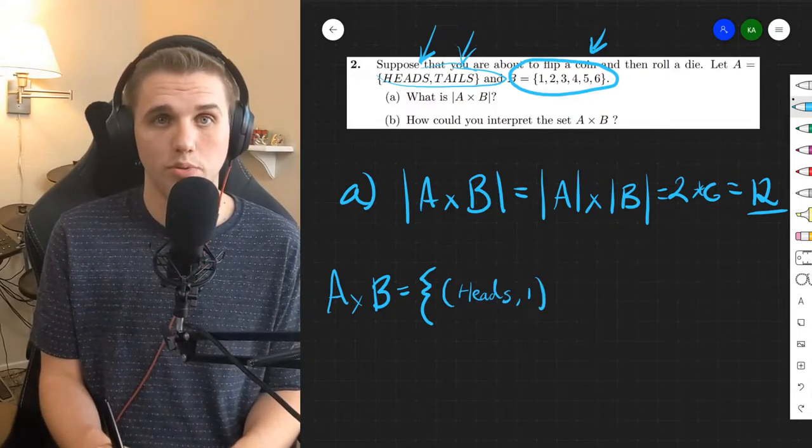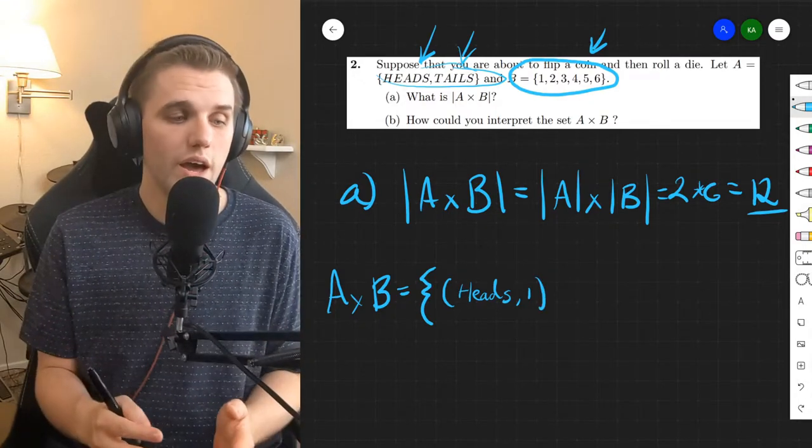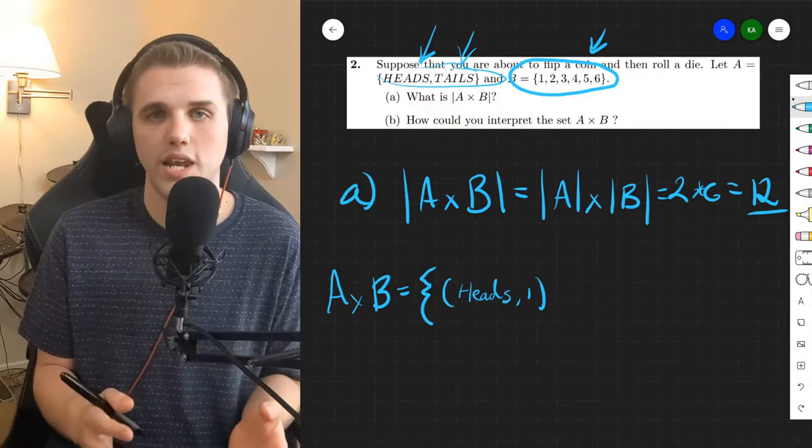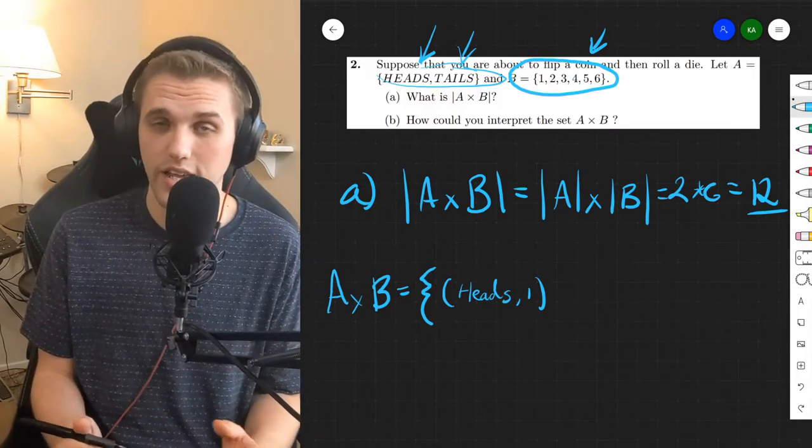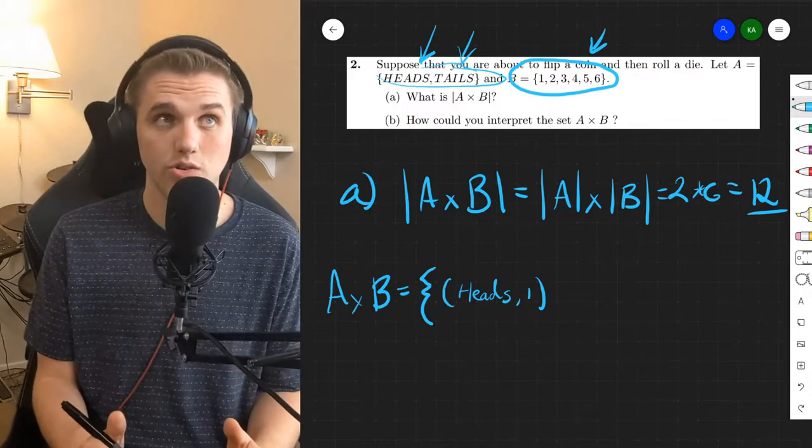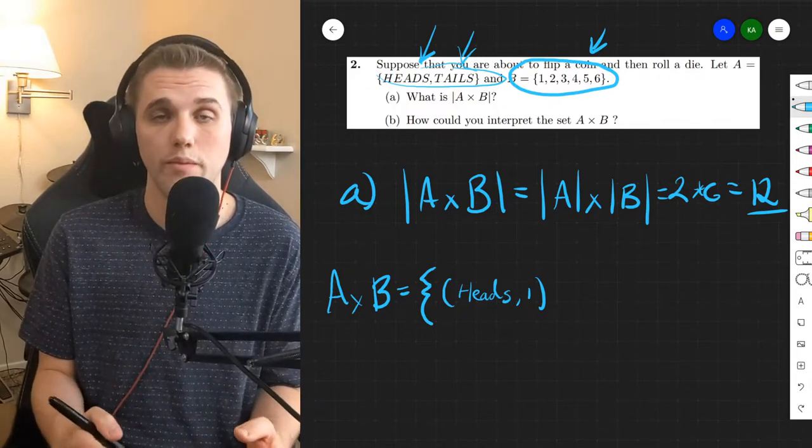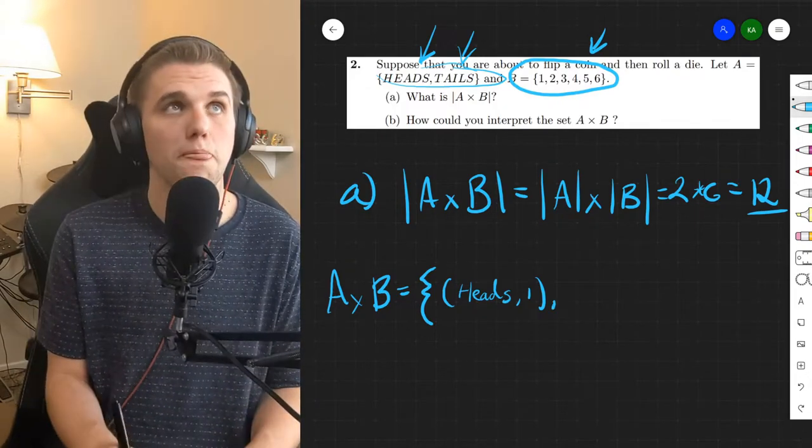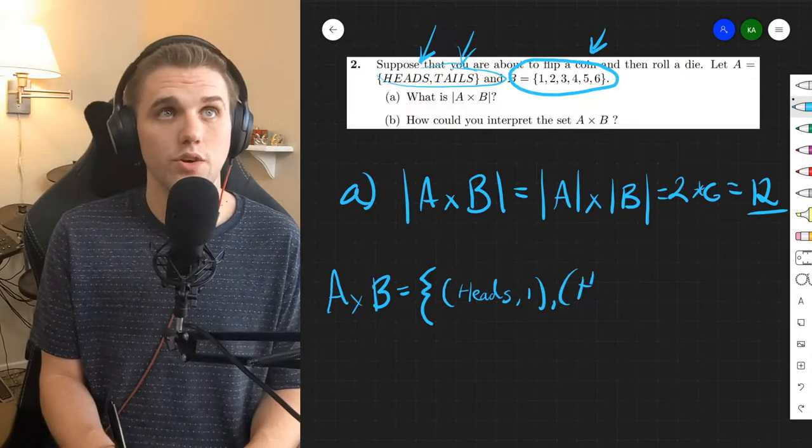So this is in the cross product and we need all of them. Again, sets don't have repeating elements. That's called a multi-set and that's different from a set. And so just make sure that you cover all of the elements and don't repeat any. So next up we could do heads in two.